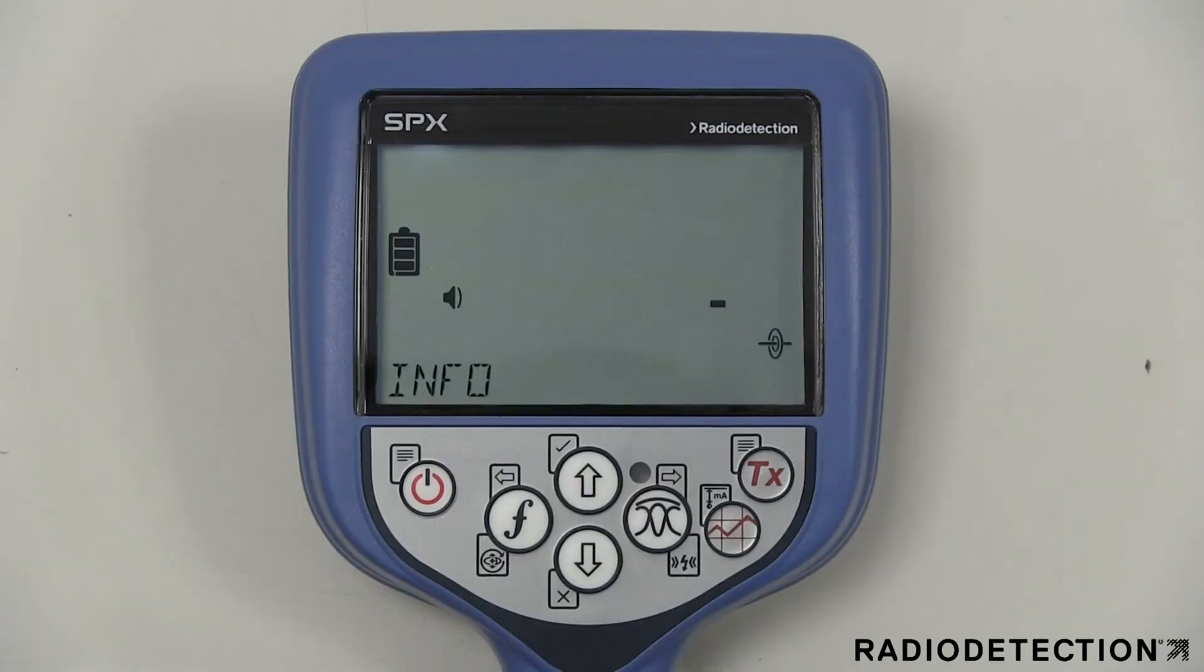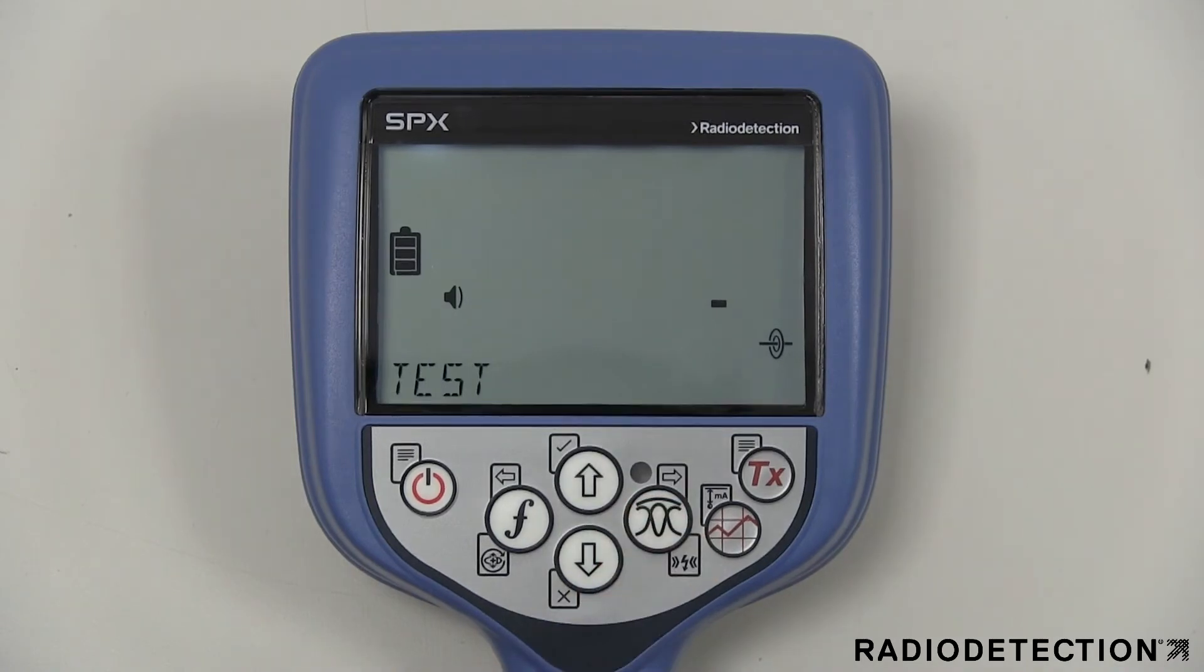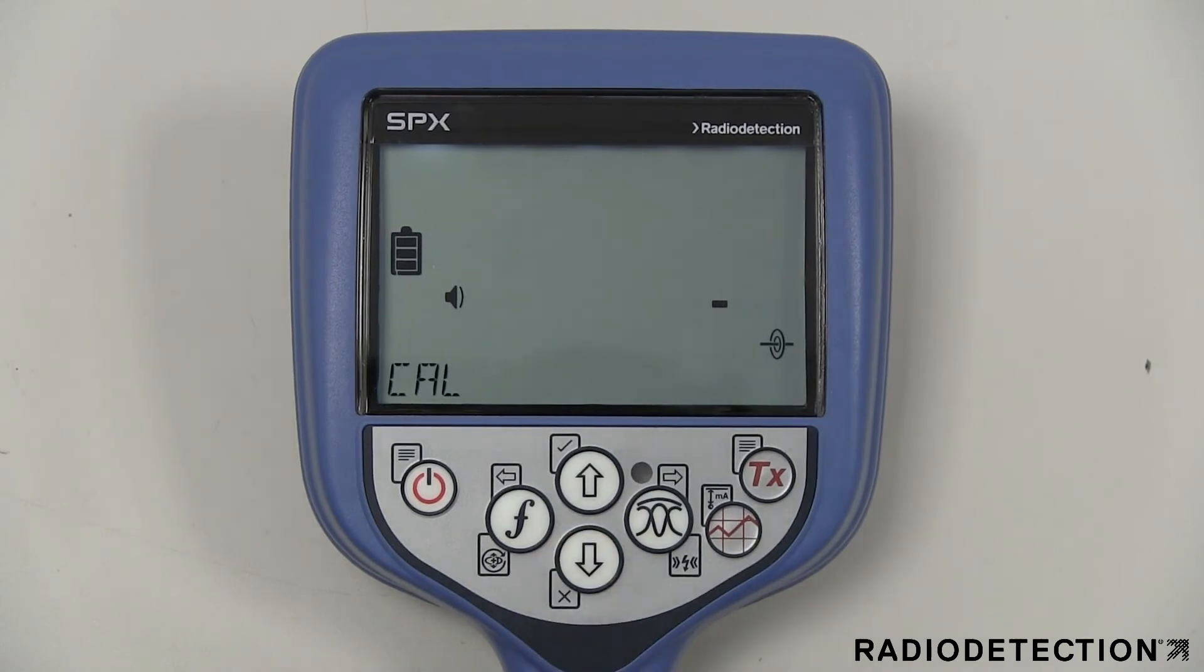The info menu option allows you to run a self test which checks the basic functionality of the locator. You can also display the date of the most recent service recalibration or the most recent e-search calibration.